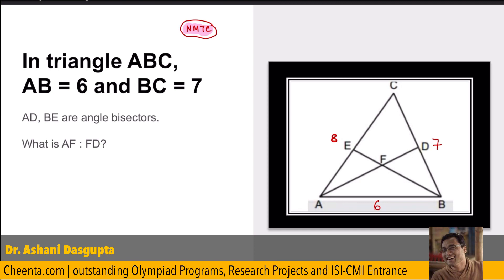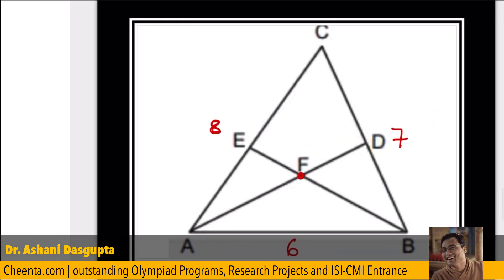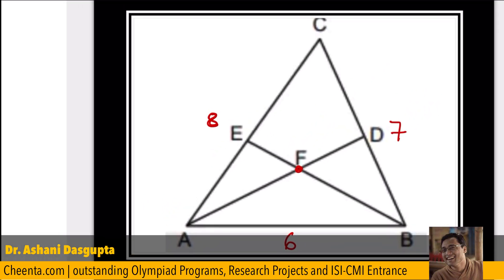Okay. So, the two angle bisectors meet at the point F. They meet at the point F. We want to find out the ratio of AF over FD. That's what we want to find out.